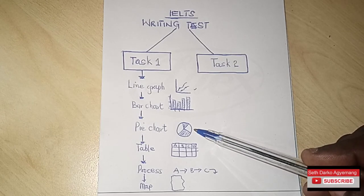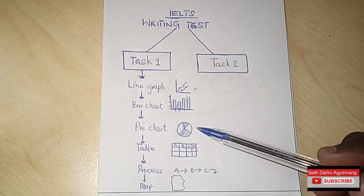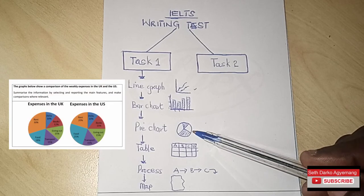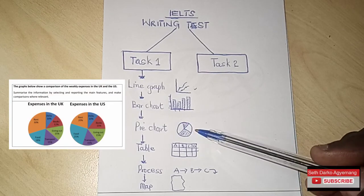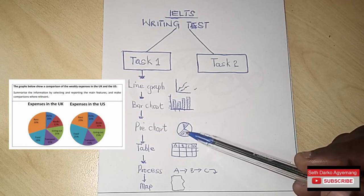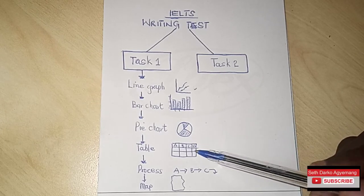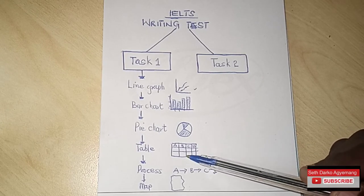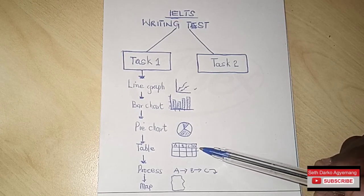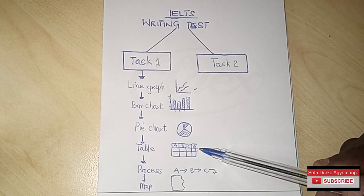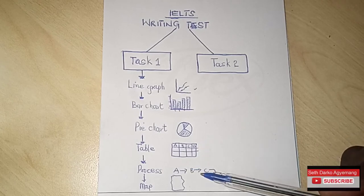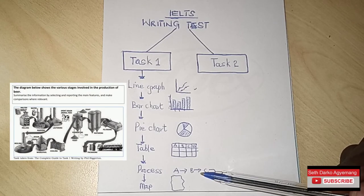For the pie chart, you will be given a pie chart where you are to talk about certain items represented in it. Then you'll also be given a table to describe. I was fortunate — I had only one table to describe and it was actually easy. So you don't have to panic at all; you just have to get the tricks and techniques and you are good to go.